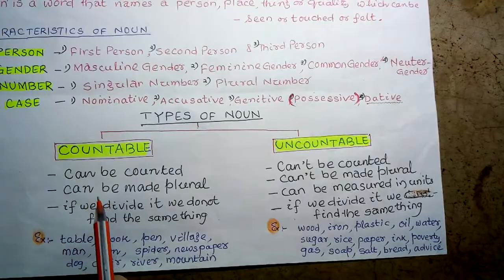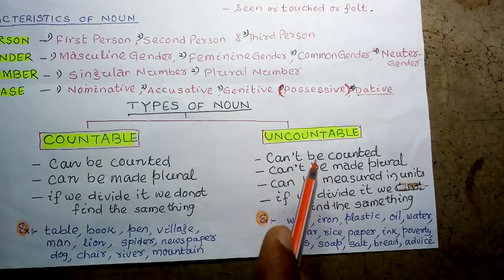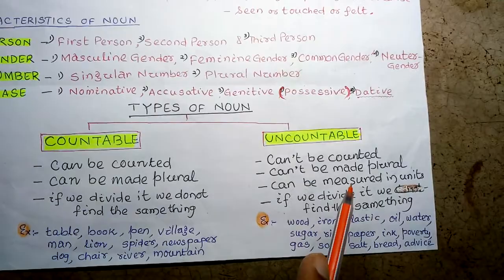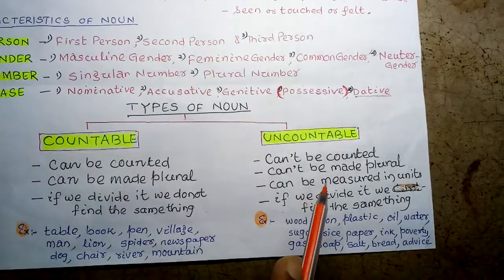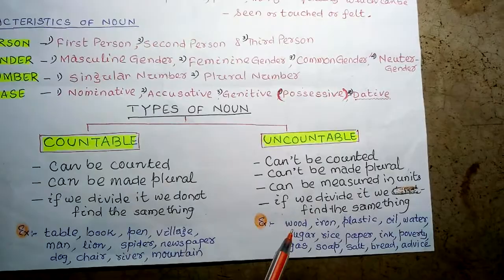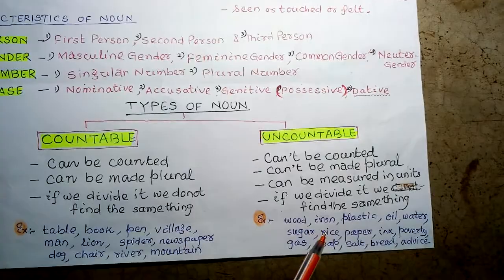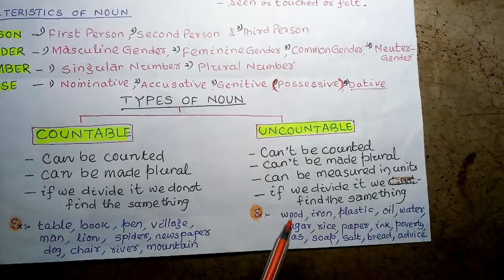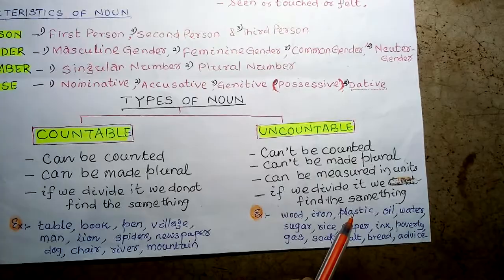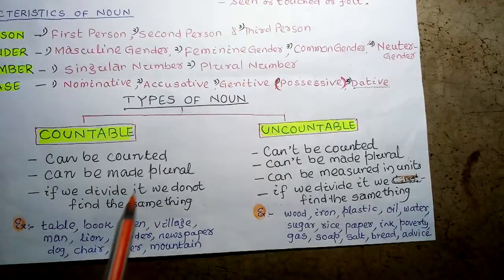Uncountable nouns cannot be counted, cannot be made plural, but can be measured in units. For example, sugar and rice cannot be counted individually. However, if we divide an uncountable noun, we find the same thing. So this is the difference between countable and uncountable.